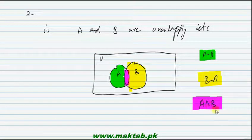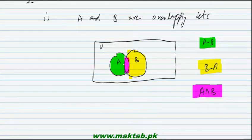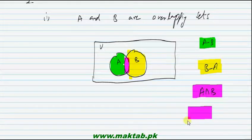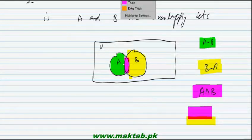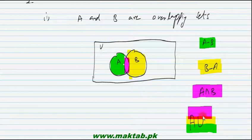Now if we talk about union, in A union B all three come: A's region, B's region — meaning all three colors show the union. So these three colors show A union B.